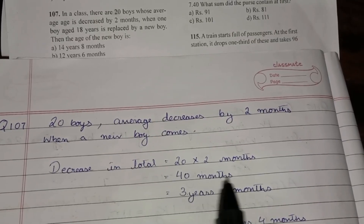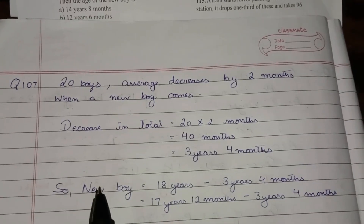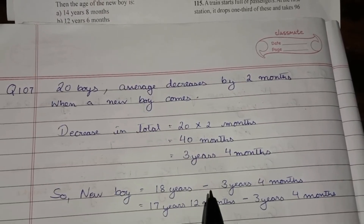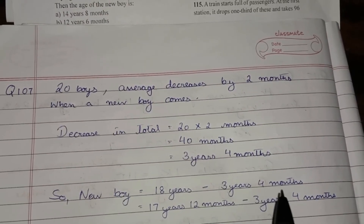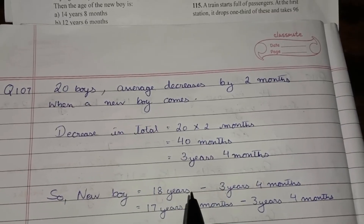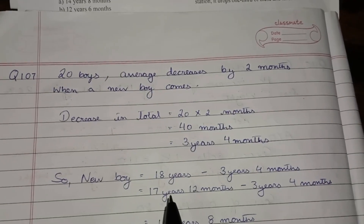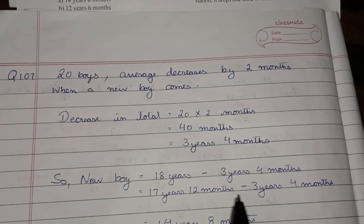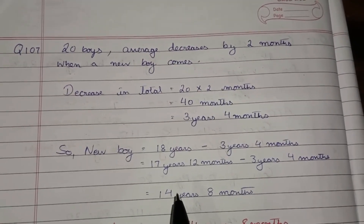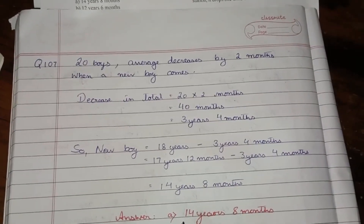Converting 40 months into years gives 3 years 4 months. The new boy's age equals the age of the replaced boy minus the decrease in total. Converting 18 years to 17 years 12 months and subtracting 3 years 4 months gives 14 years 8 months. Hence option A is the right answer.